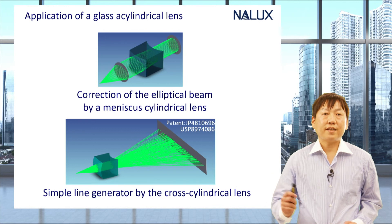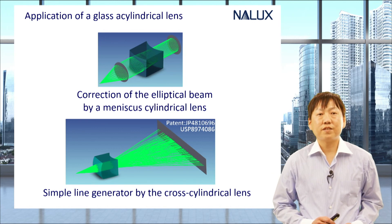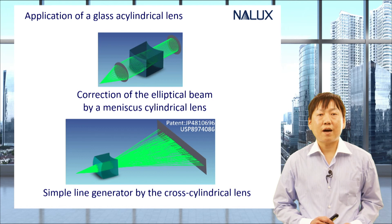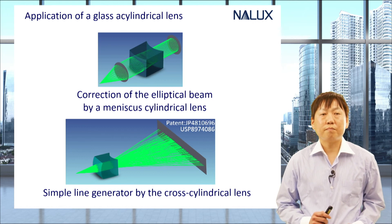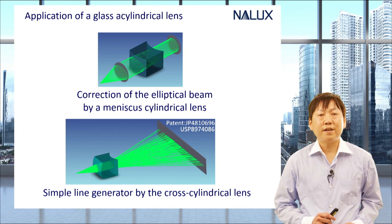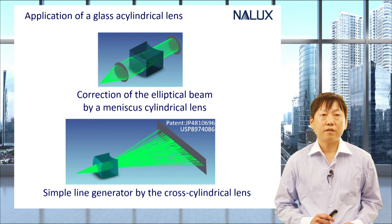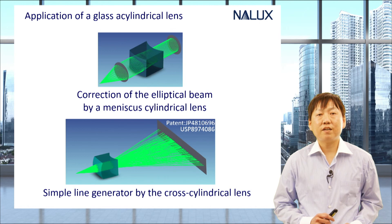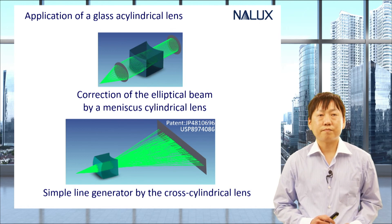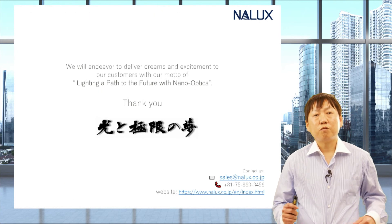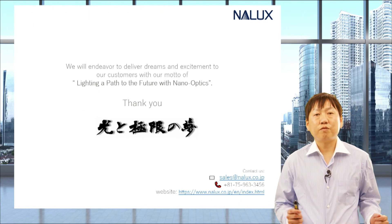This is another application for light sources. The upper figure shows correction optics for a collimating beam whose profile is elliptic, making it well-rounded. The lower figure shows a simple line illumination generator with a crossed cylindrical lens. We promise to bring a new future with our glass cylindrical lenses.